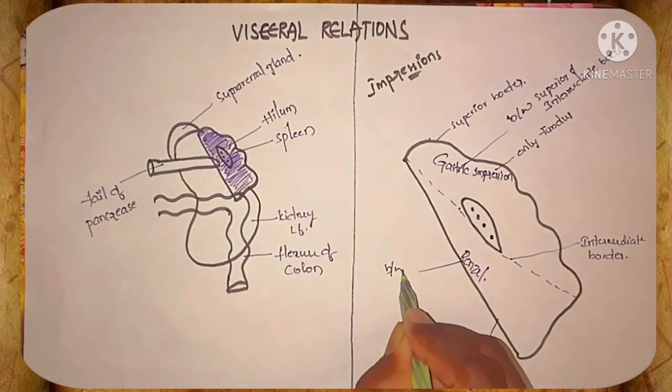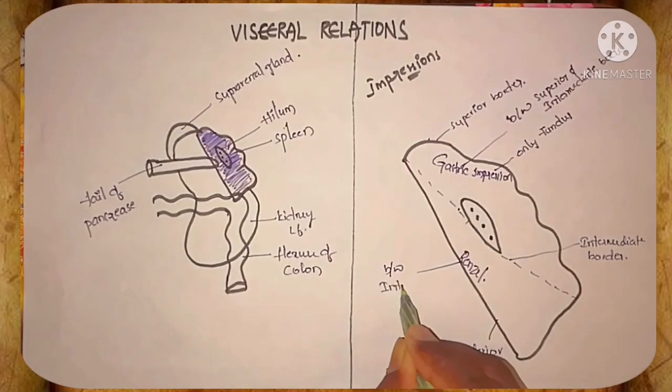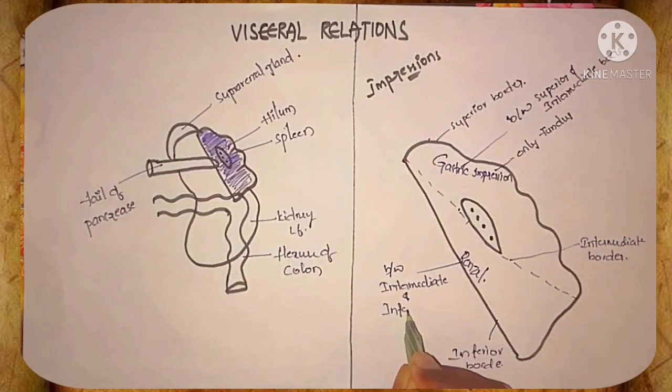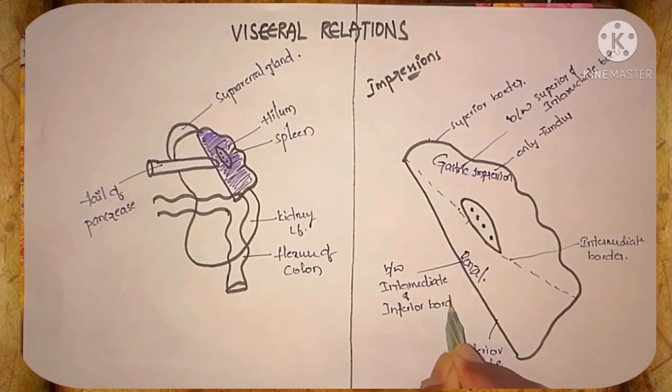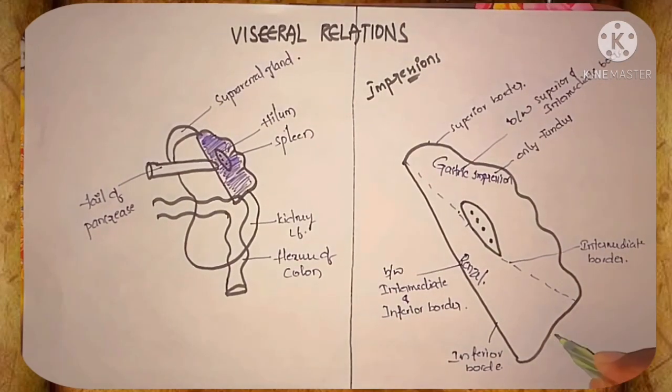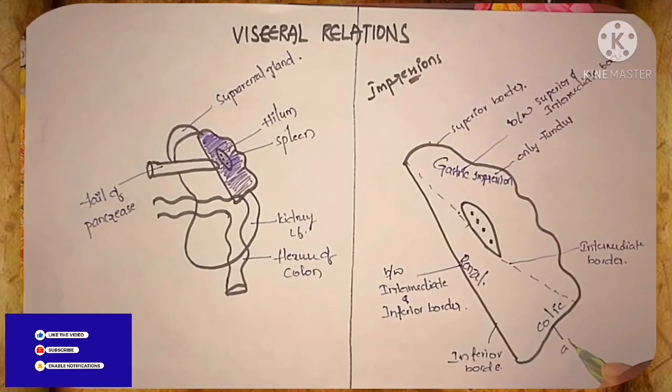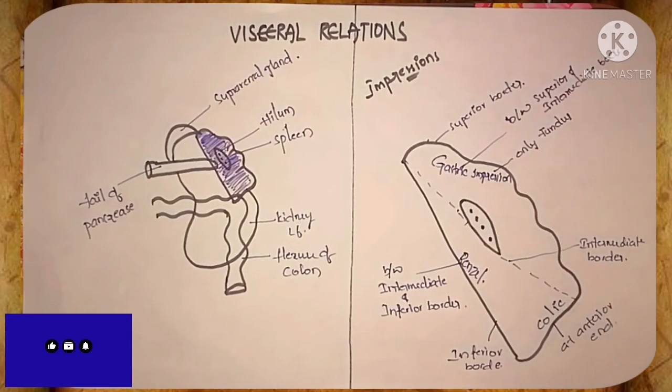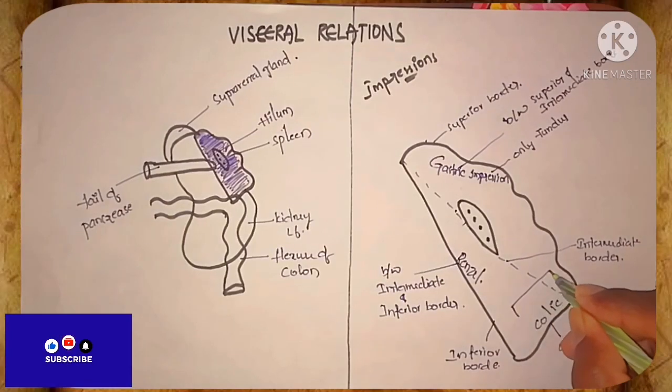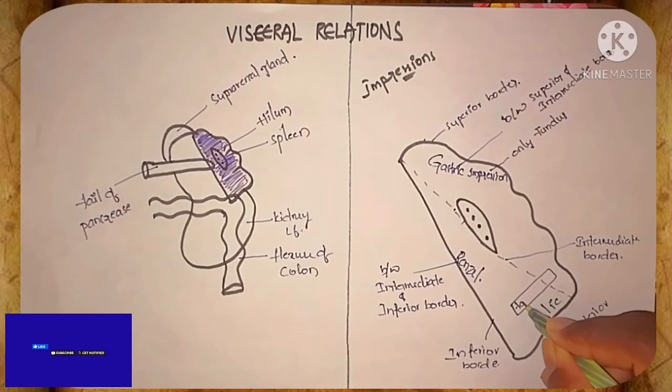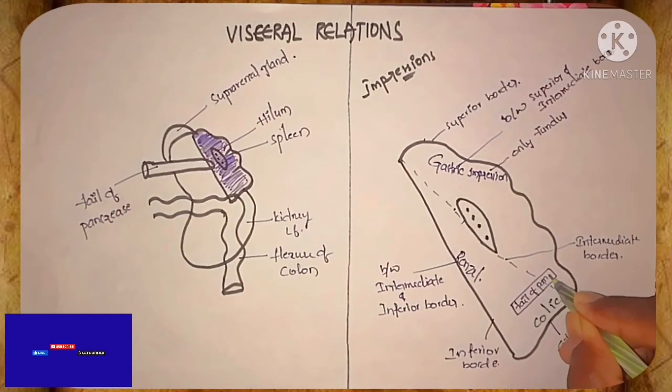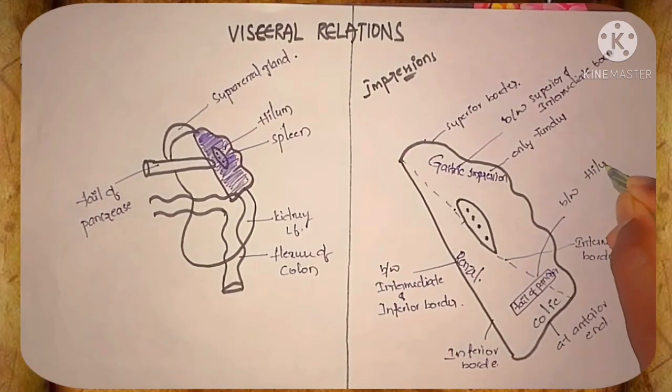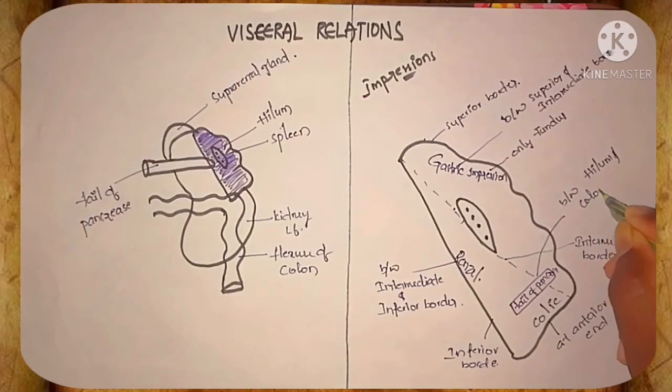Coming to the left renal kidney, it is in between the intermediate border and inferior border. Coming to the colon, it is at the anterior end. Coming to the tail of the pancreas, it is in between the intermediate border and at the anterior end.